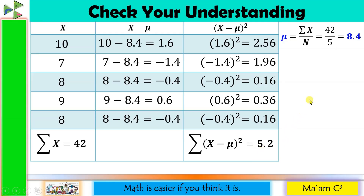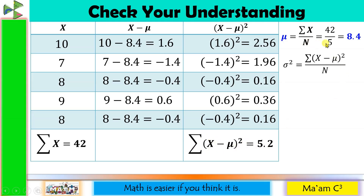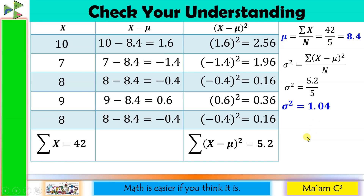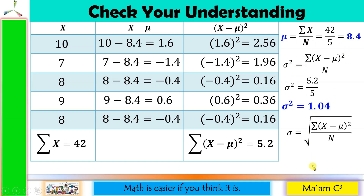Now we can solve for the population variance: summation of quantity x minus mu squared divided by N equals 5.2 divided by 5, which gives 1.04. For the standard deviation, we take the square root of the variance: the square root of 1.04 is 1.0198.